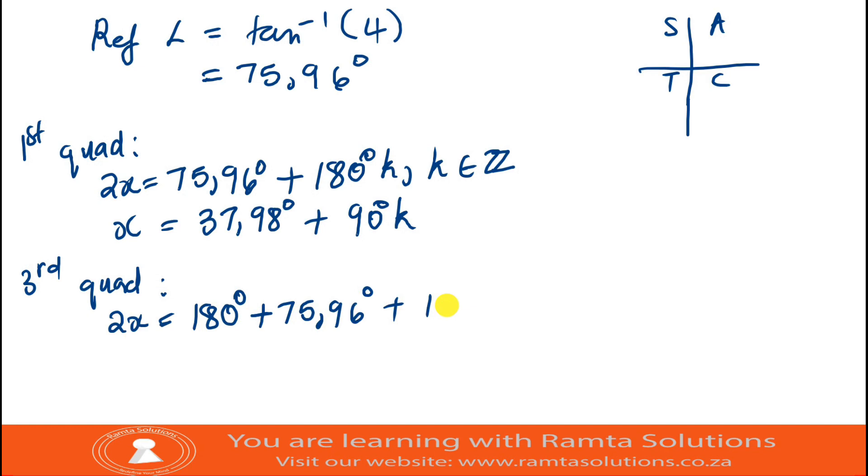Plus 180 degrees k, where k is an element of integers. So 2x equals 255.96 degrees plus 180 degrees k.